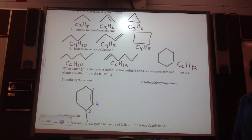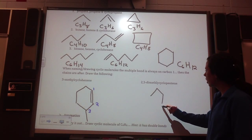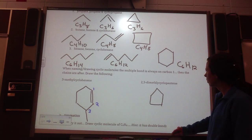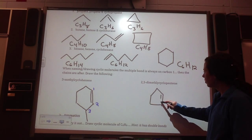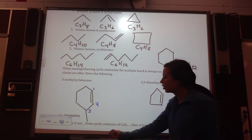So, if we tried, say, cyclopentene, so we need 5 carbon. Wherever you put the double bond is where it should be 1.